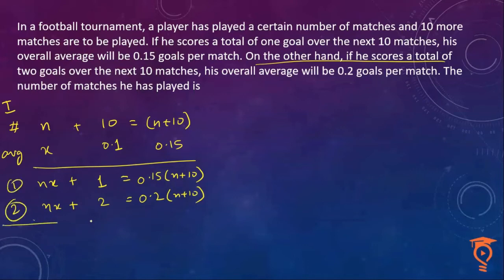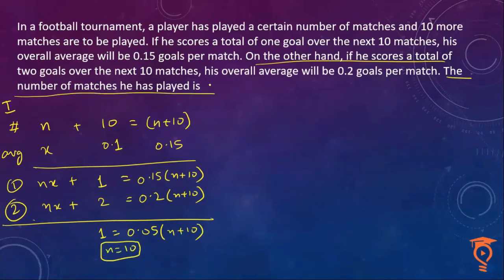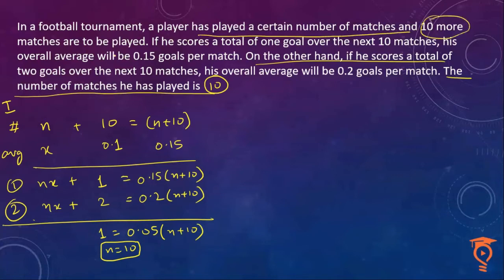Call these equations one and two. If you subtract the two equations, you get 1 = 0.05 times (n + 10), from which the number of matches already played is 10. Since this is a tricky question, a lot of people would be confused even after doing it correctly and give the final answer as 20, confusing the total number of matches. But the question clearly says he has played a certain number of matches and 10 more are yet to be played — they haven't been played. Every statement starts with 'if', meaning these are only hypothetical situations.